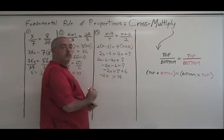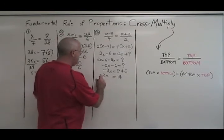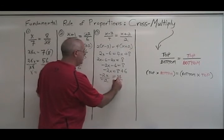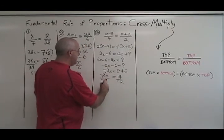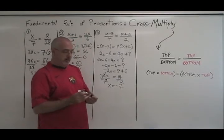Negative 2x equals 14. Finally, our x is being multiplied by a negative 2, so we divide both sides by negative 2. These cancel. x is equal to negative 7. We have our answer.